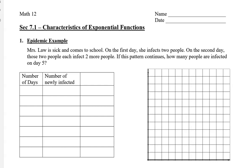So let's fill in this chart to look for a pattern. On day zero only I am infected, so I'm going to put one. On day one I go to school and I infect two people. Then on day two those two people each infect two more people, so that means they infect four people. On day three those four people each infect two people, so we get eight, and then 16, and then 32. We can see that each day the numbers are doubling.